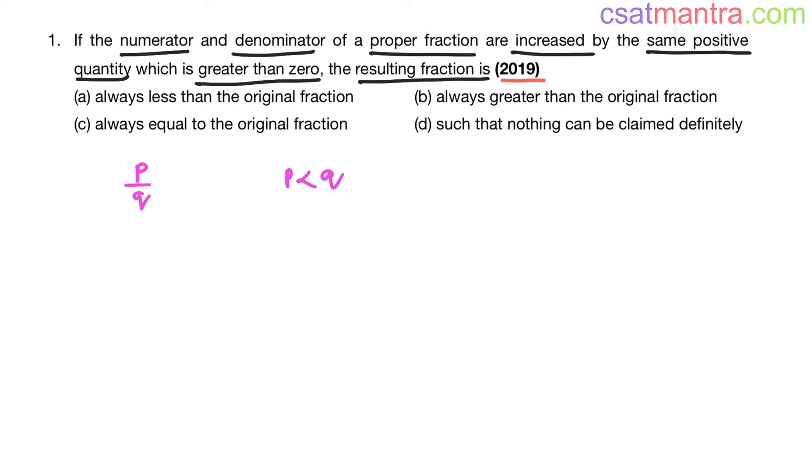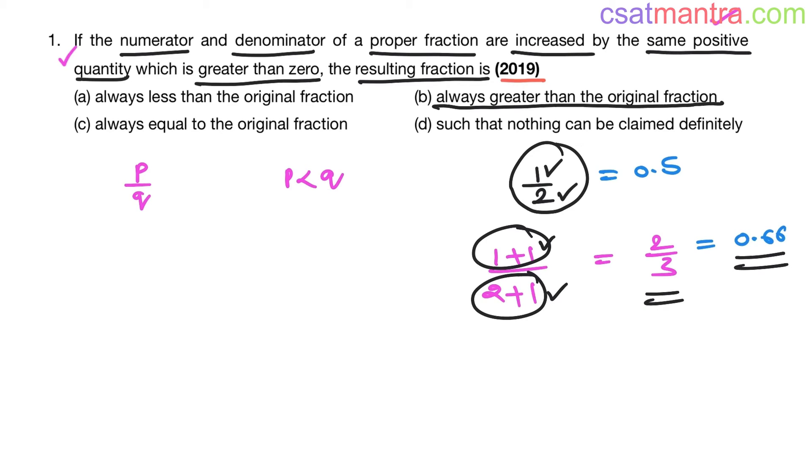Now, let's solve this problem with the help of without loss of generality concept. I am taking a proper fraction, 1 by 2. Numerator is less than denominator. Now, I am increasing numerator by some positive quantity, say 1. 1 plus 1 by denominator also, 2 plus 1. Now, this is 2 by 3. Now, see, 1 by 2 is 0.5, 2 by 3 is 0.66. So, when a proper fraction is increased by same positive quantity in numerator and in denominator, the resulting fraction is always greater than the original fraction.